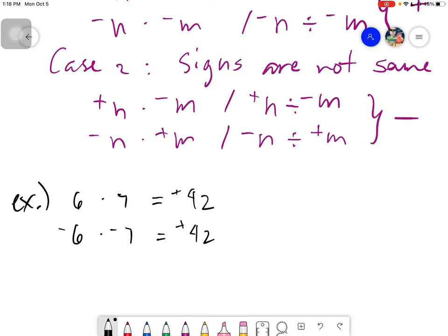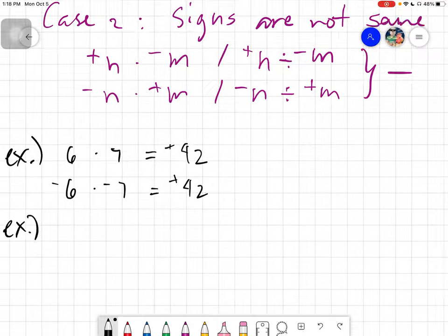Another example. Negative 2 times negative 3. Same sign, right? So the answer is positive 6.